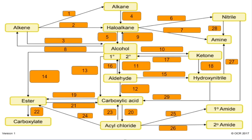Quick revision video on the organic reaction pathways for aliphatic compounds. I've got this flowchart from OCR and all I've done is hidden the reagents and conditions with those 29 boxes. That's the order I'm going to go through them in. If you want to pause the video you could try and do these yourself and then play on to check your answers.